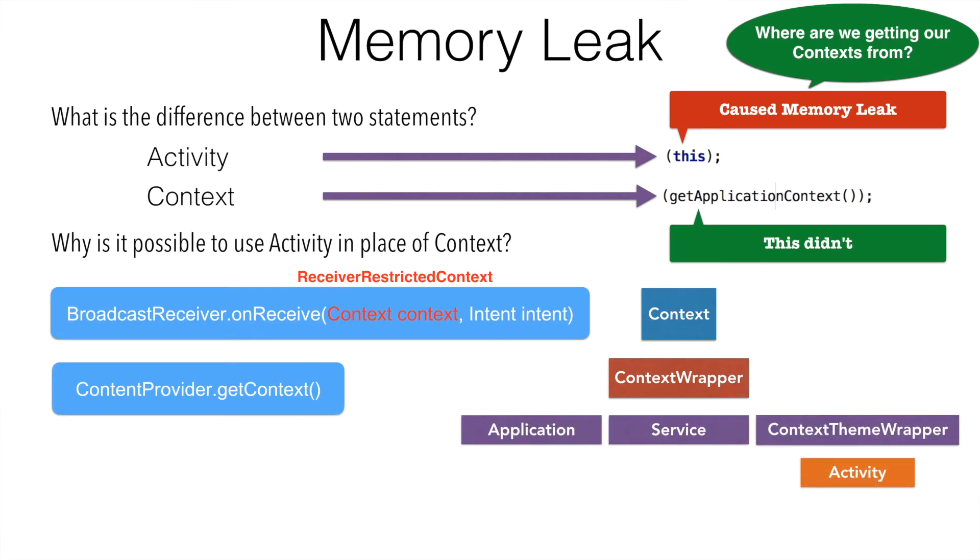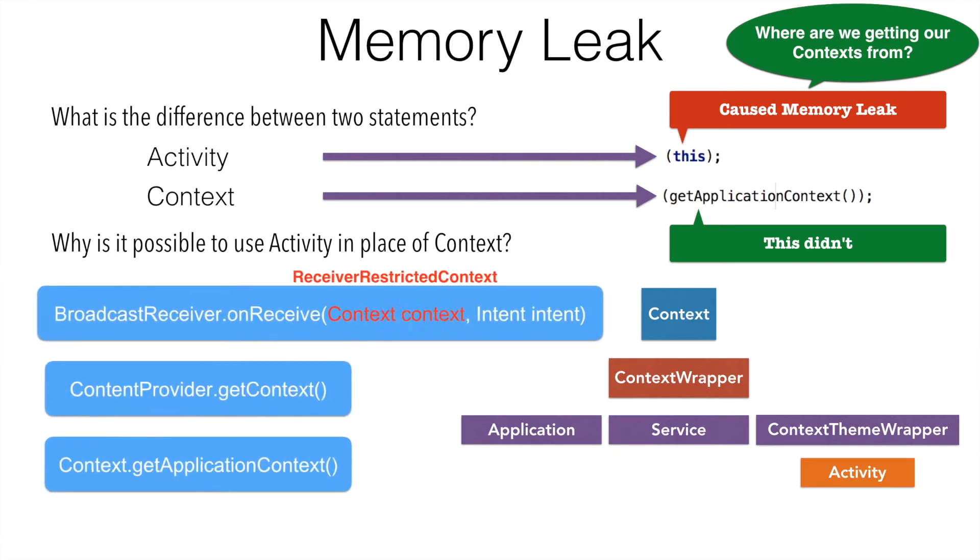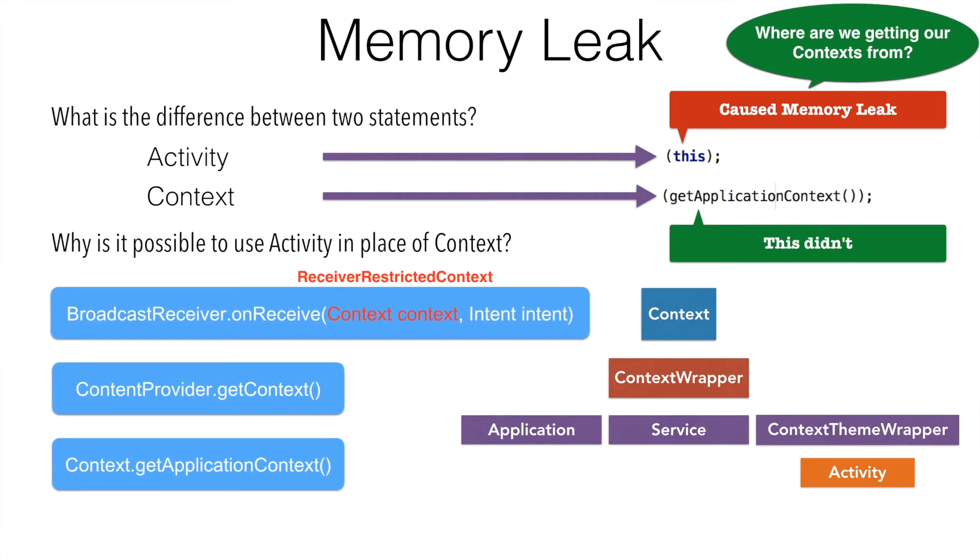And then you are familiar with a very well known method called getApplicationContext. All these three things, whenever they need a context, they get an application context. And this application context is a singleton object. That means in Android application, you have only one object of Application. And whenever you invoke getApplicationContext or getContext, you always get the same object. Android doesn't create a new instance of the application context and give it to you.